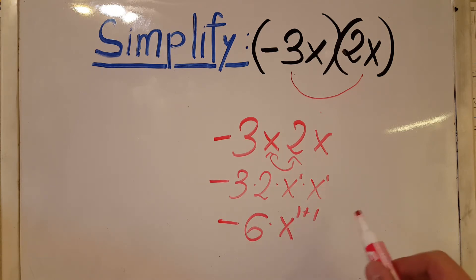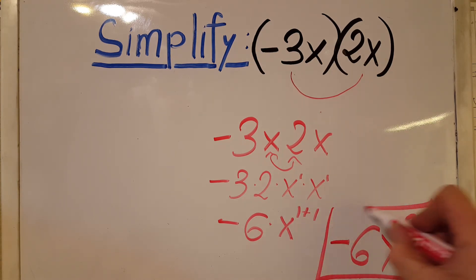And therefore we're gonna have our solution will be negative 6x squared, and this is our solution.